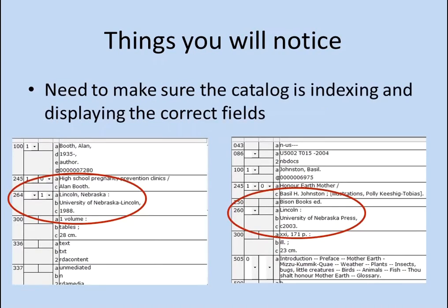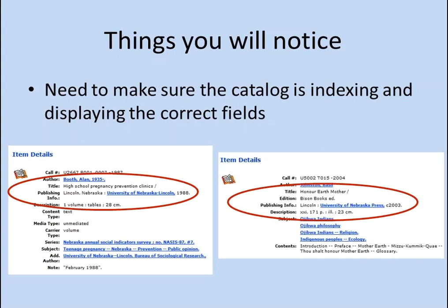Make sure your catalog is indexing and displaying the correct fields. One change is that publication information is in a different MARC field in newer RDA records — they created a new 264 field, whereas older records have that information in a 260 field. You want to make sure your system displays both fields with the label 'publishing information' so patrons don't see records with no publishing information. A phone call to your vendor would be in order to make sure this is handled correctly.